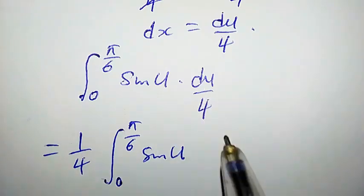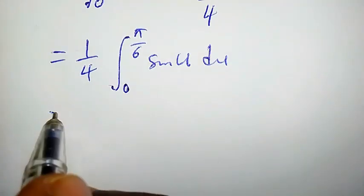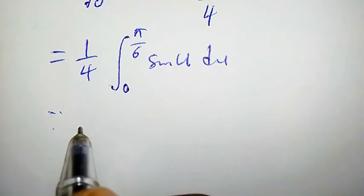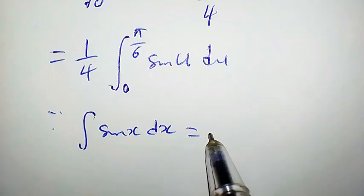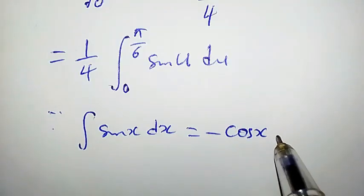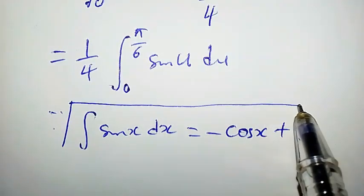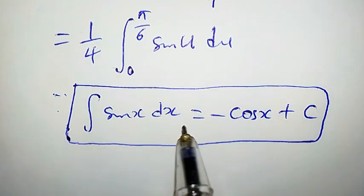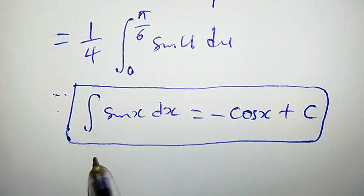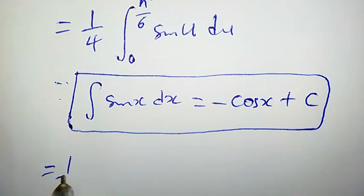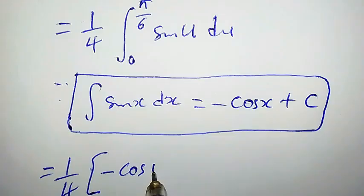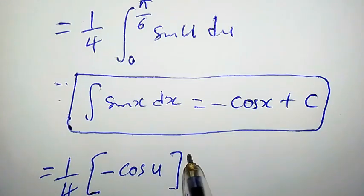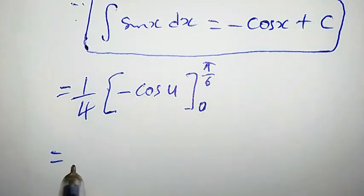Recall that the integral of sin(u) du equals −cos(u) + C. Applying this property, we get (1/4) times [−cos(u)] evaluated from 0 to π/6.